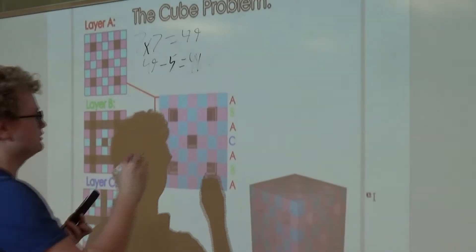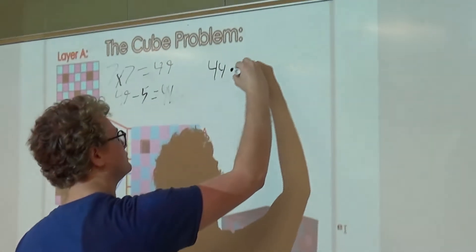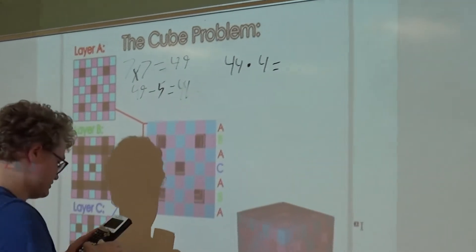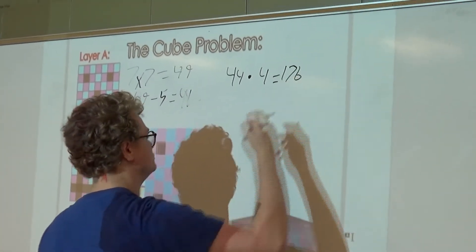So that's 44 cubes for each of these layers, and that adds up to 176 cubes.